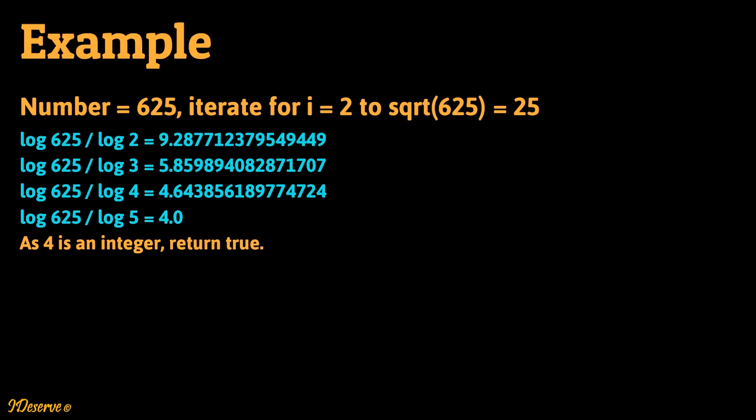Let's take another example. Consider the given number as 625. We have to iterate for i equal to 2 to square root of number which is square root of 625 and if log of 625 by log i comes out to be an integer we have to return true.